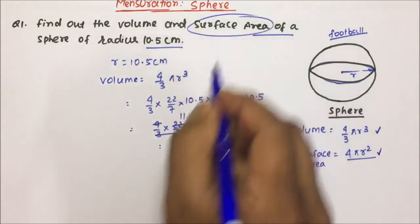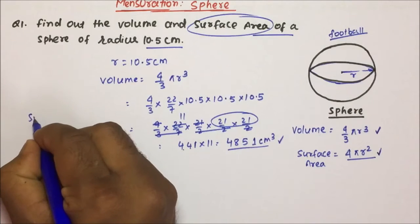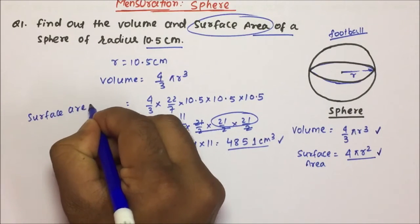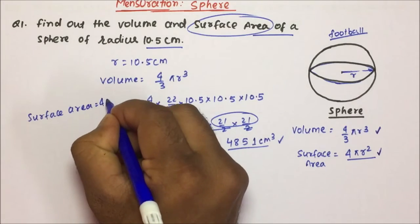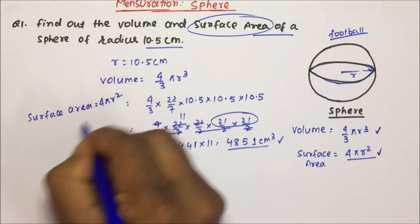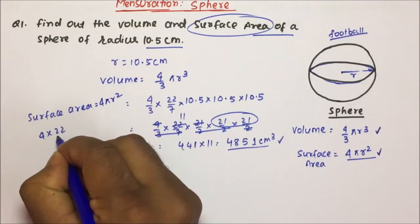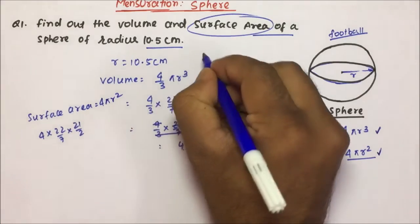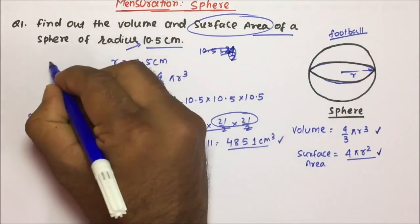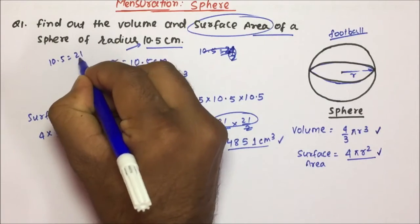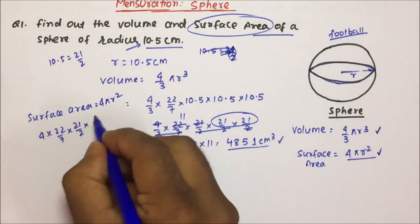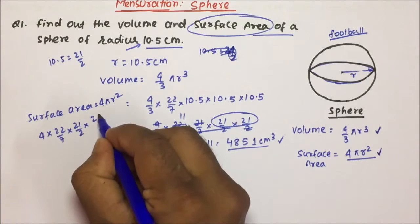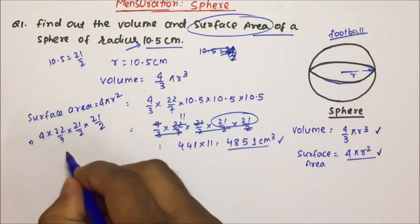Now friends, we have to calculate the surface area as well. Surface area we already know — surface area is nothing but 4 pi r square. So 4 into 22 by 7 into r square. Friends, r is again 21 by 2. So this 10.5 we have written as 21 by 2. So 4 into 22 by 7 into 21 by 2 into 21 by 2 — that is r square.